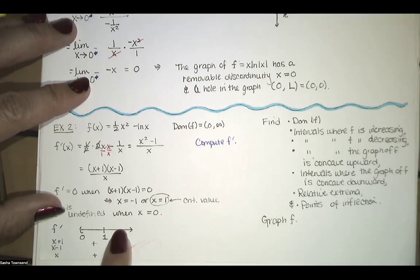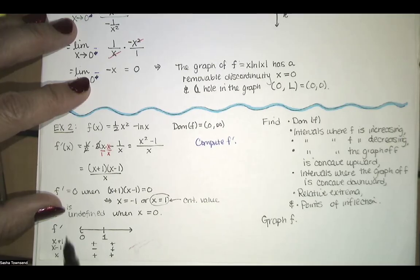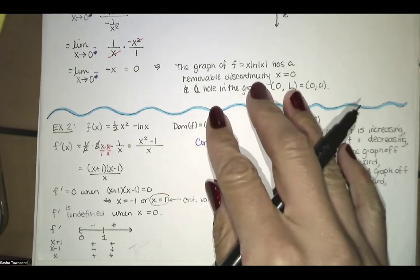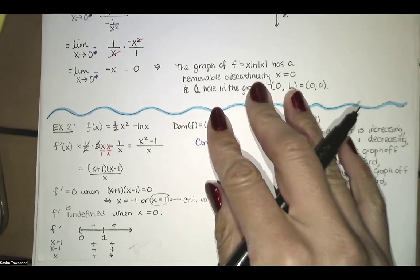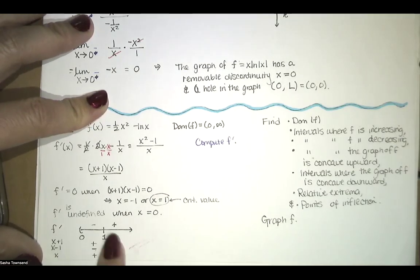When x is greater than 1, say 2, x minus 1 is positive. When x is less than 1, say 0.5, we get 0.5 minus 1, which is negative one half. So on (0,1), f prime is positive times negative divided by positive — that's negative. On (1,∞), f prime is positive times positive divided by positive — that's positive. Those are the signs of f prime.